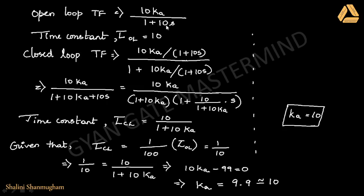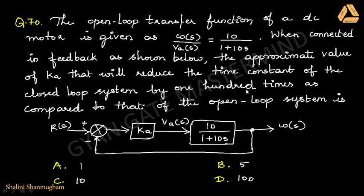The open loop transfer function is 10·Ka/(1 + 10s). This is already in standard first-order form, so the open loop time constant τ_OL = 10. The closed loop transfer function is G(s)/(1 + G(s)H(s)), giving 10·Ka/(1 + 10·Ka) divided by (1 + 10/(1 + 10·Ka)·s). From this standard form, the closed loop time constant is τ_CL = 10/(1 + 10·Ka).